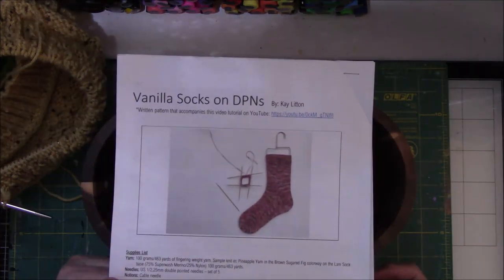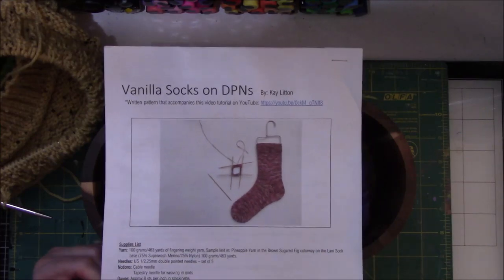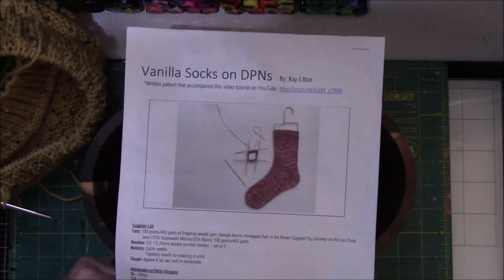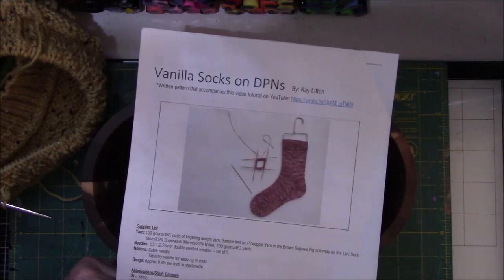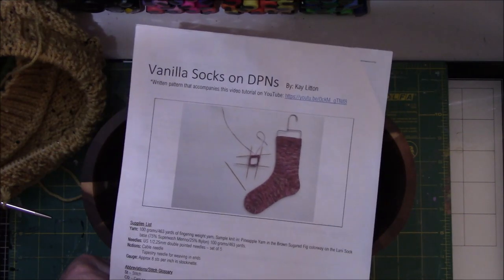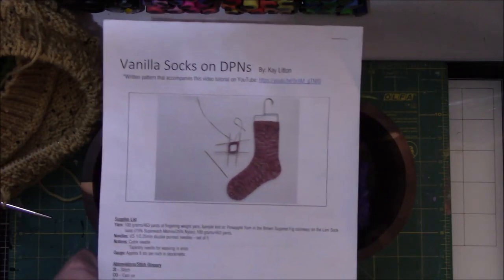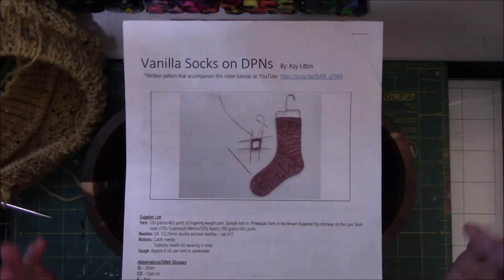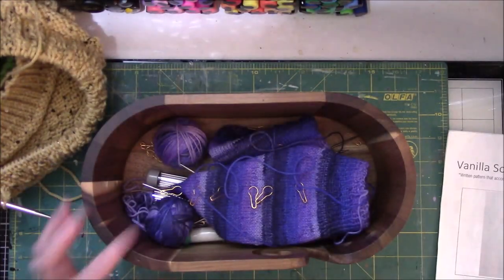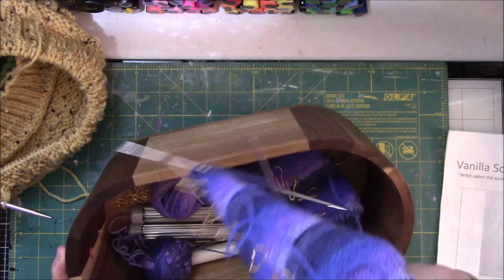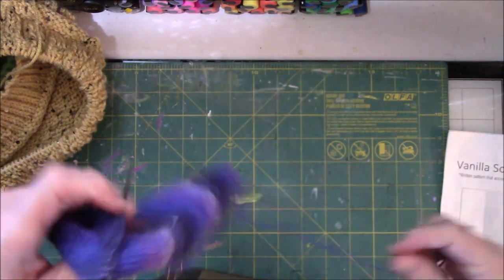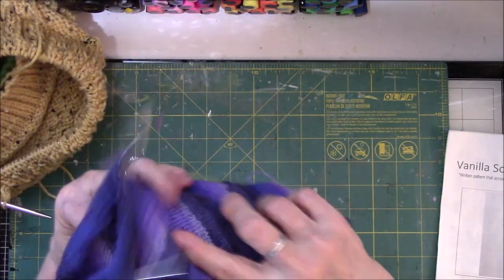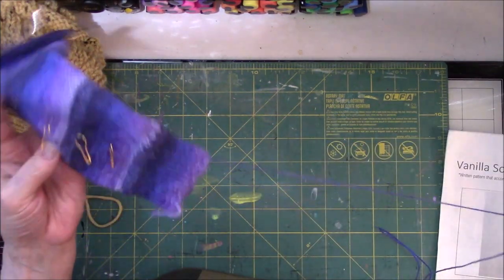So this is the Vanilla Socks on DPNs by Kay Litton. And if you don't understand any of it, she does have a YouTube channel that's in blue. I bought this pattern last year when she had a sale 50% off on her patterns. I think I bought five. So this is like a beginner sort of thing. But I like doing vanilla socks. I love DPNs. So I got the pattern.